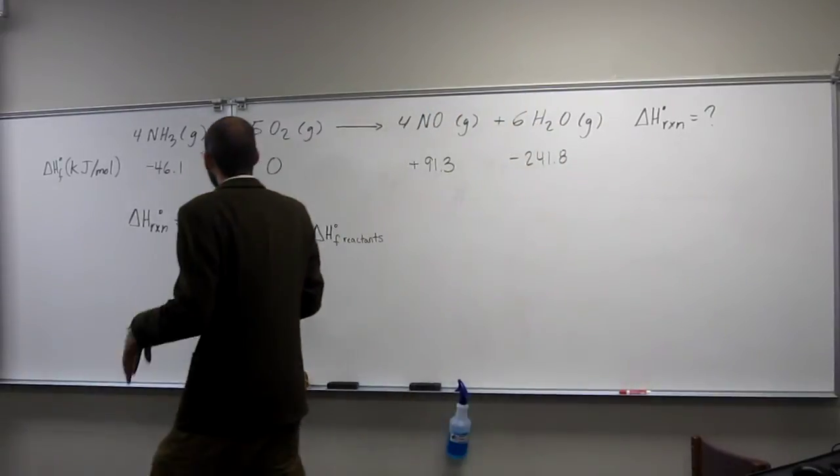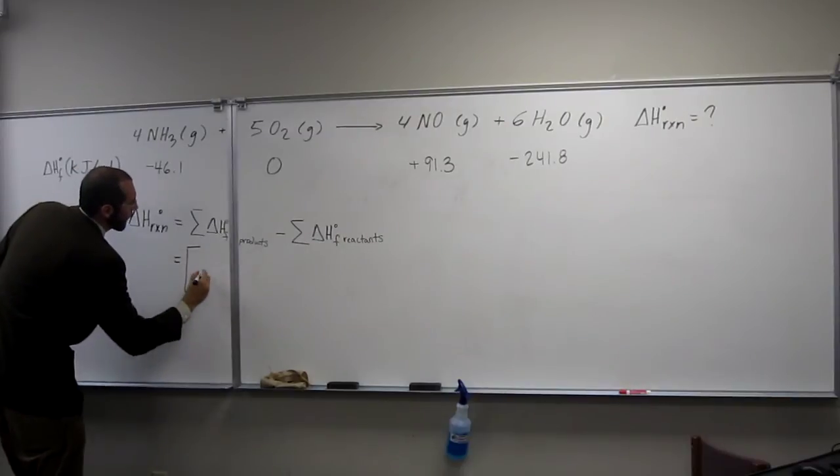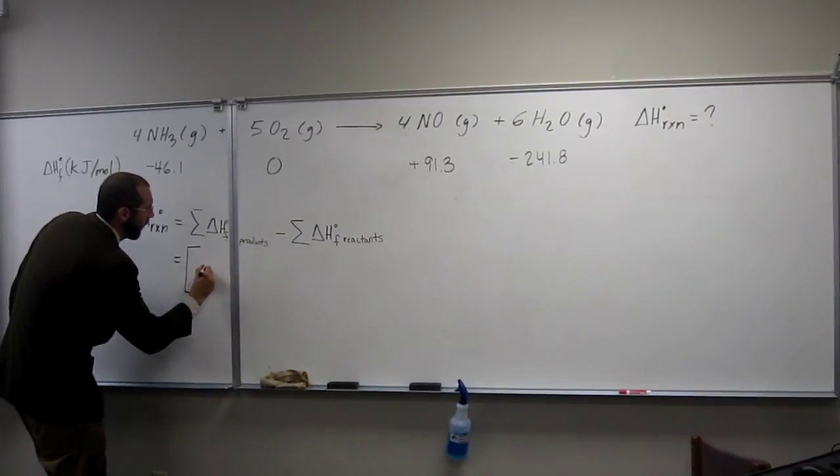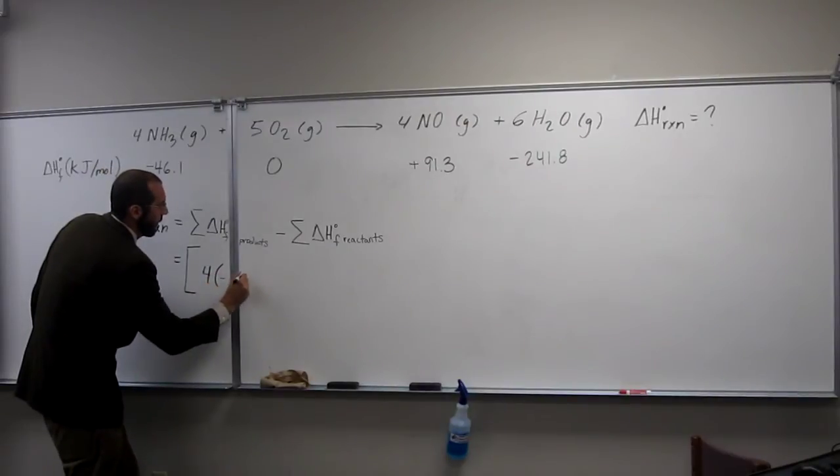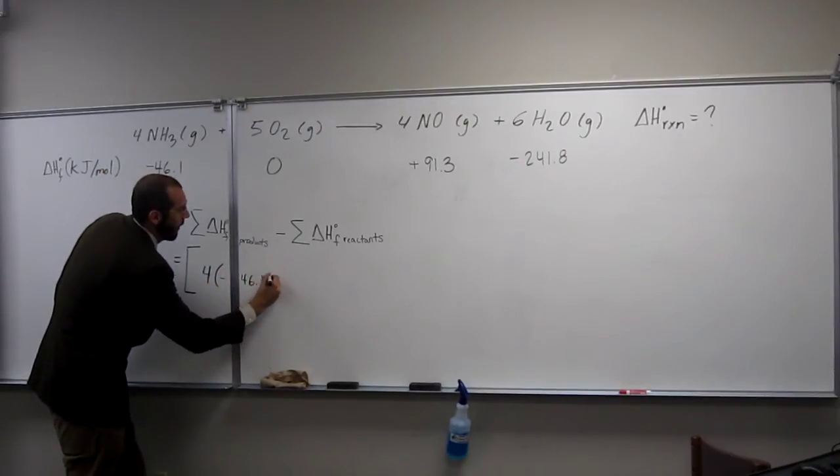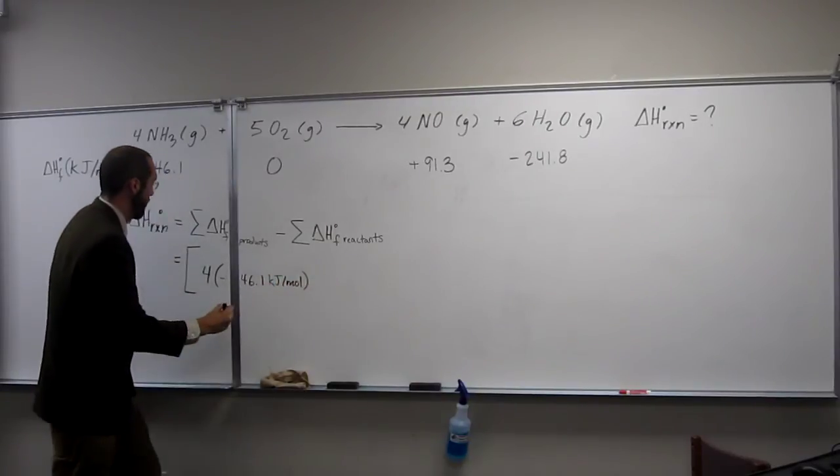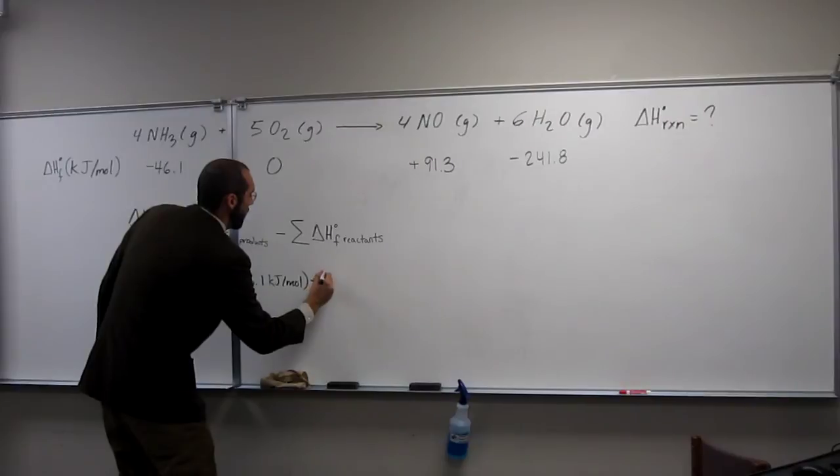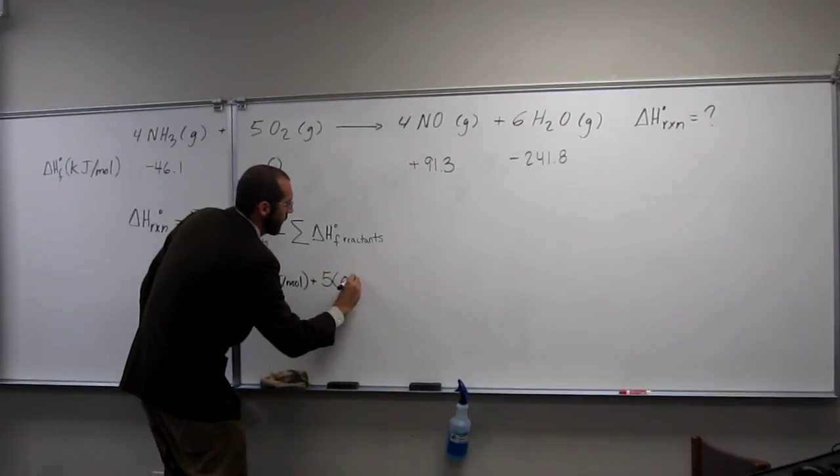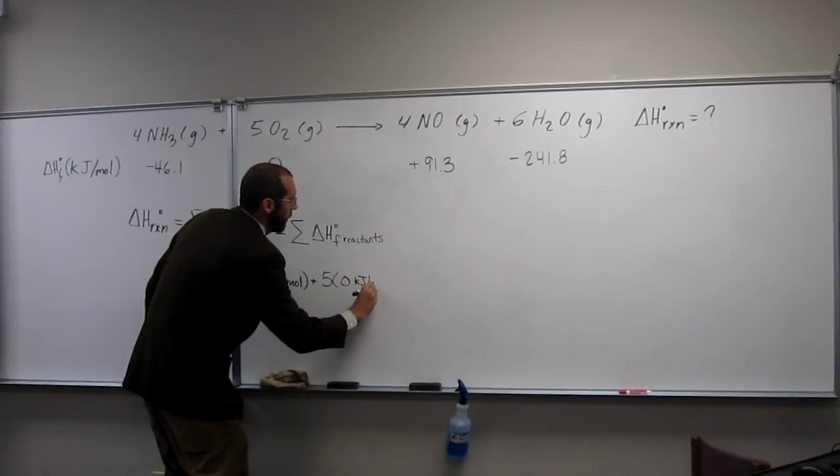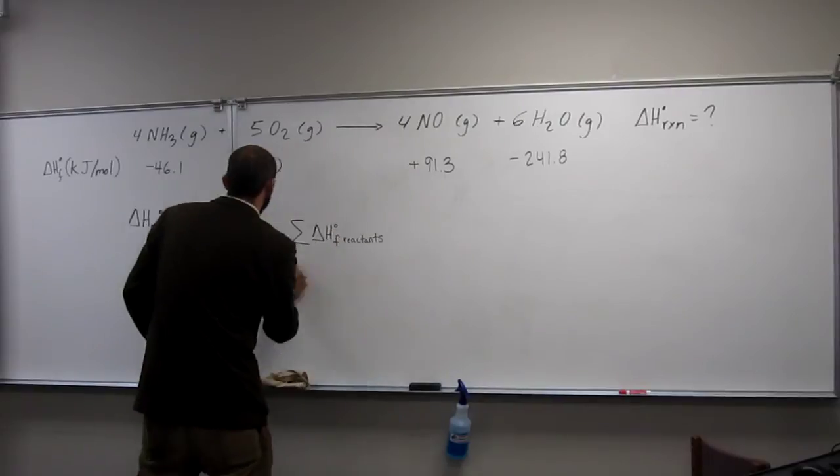Okay, so now, I like to do these brackets and whatnot. So, 4 times negative 46.1 kilojoules per mole, plus 5 times 0 kilojoules per mole. Oh, duh. That's not the way to do it.